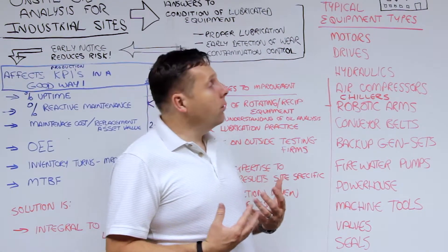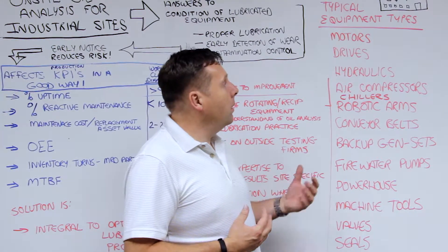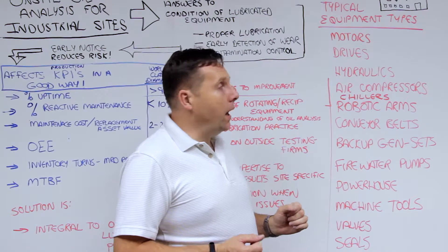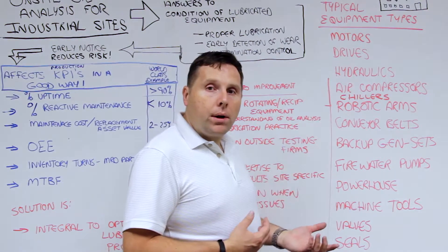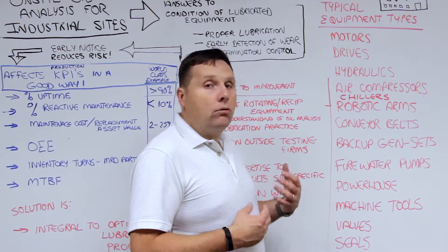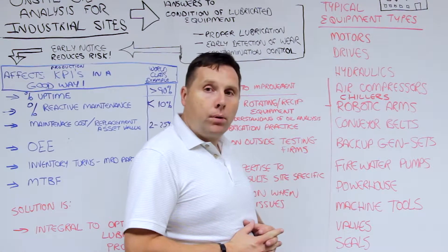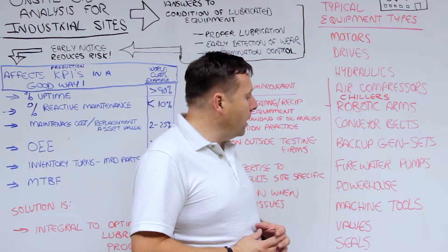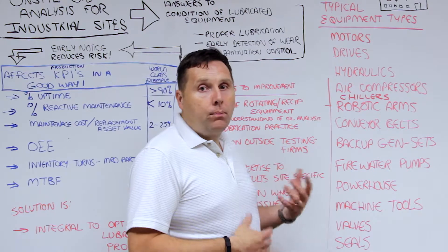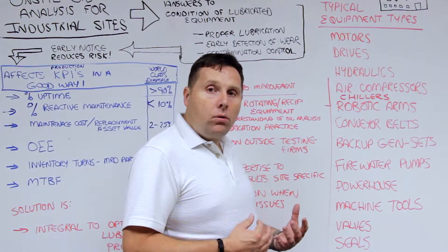What we're looking for in typical industrial sites, as I said earlier, is there's such a diversity of equipment. We can have motors and drives that are oil lubricated, hydraulic systems, air compressor systems, chillers, robotic arms on discrete manufacturing systems, conveyor belts for process line control, backup gen sets, fire water pumps, as well as process fluid pumps.